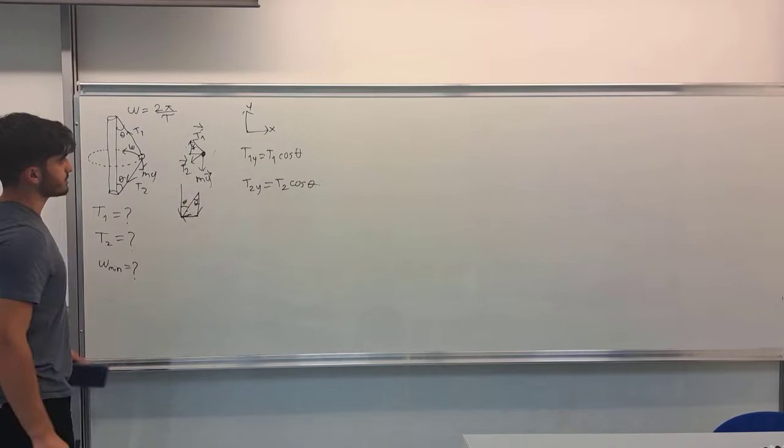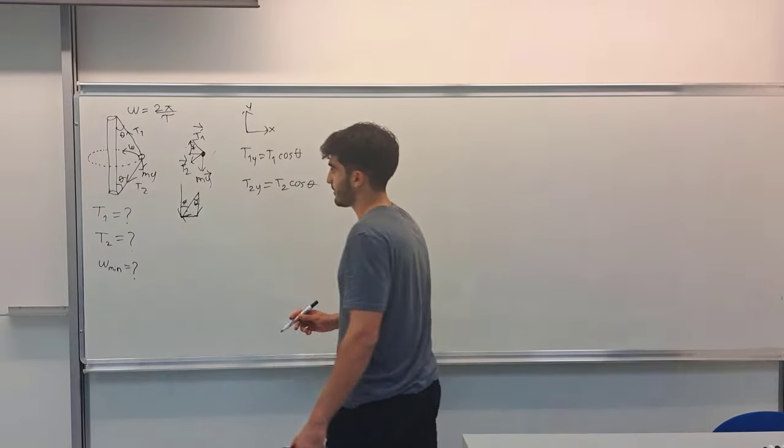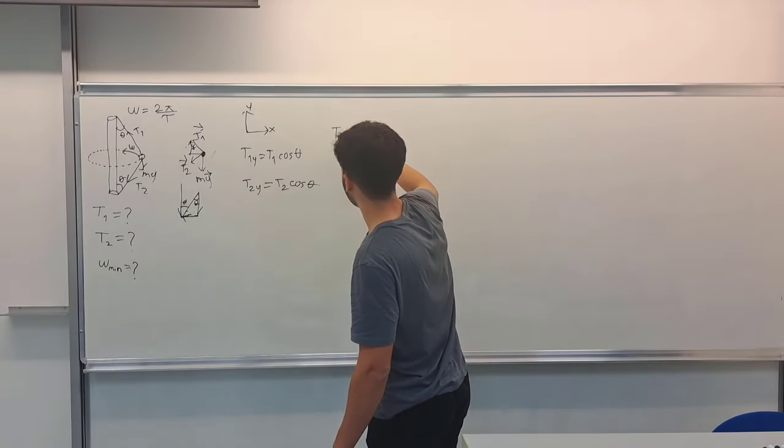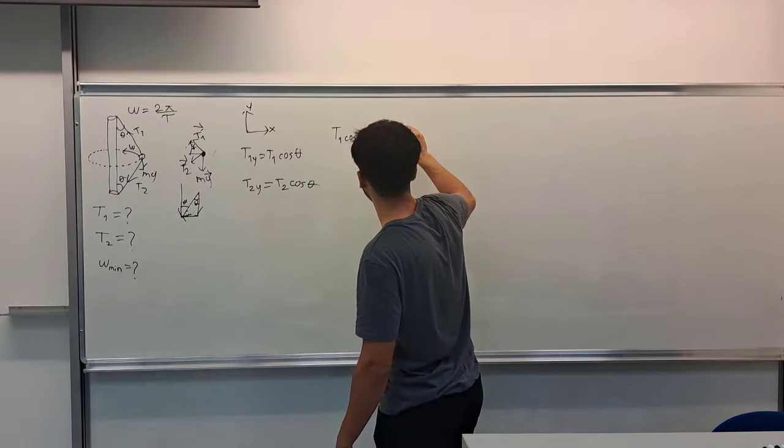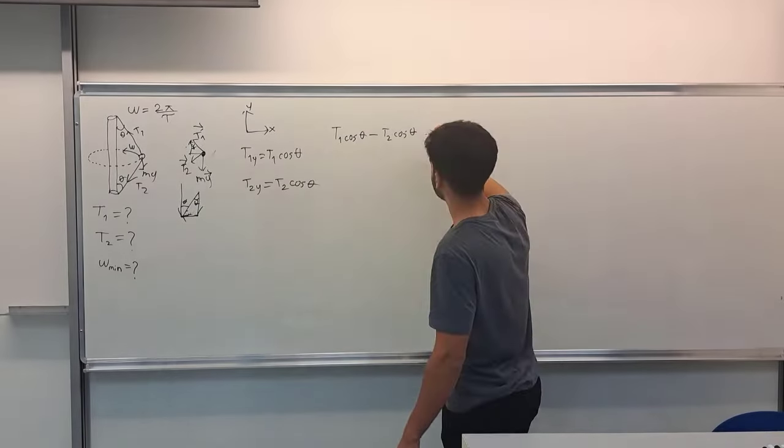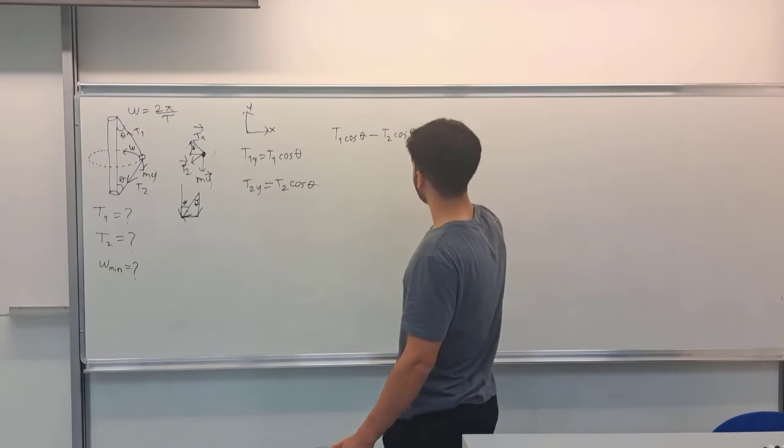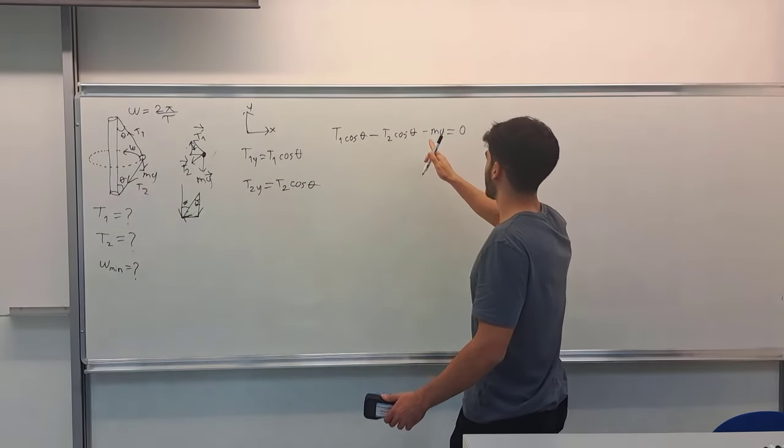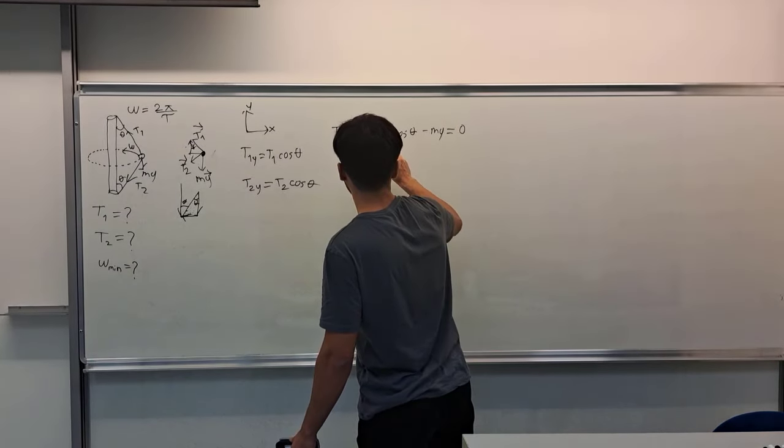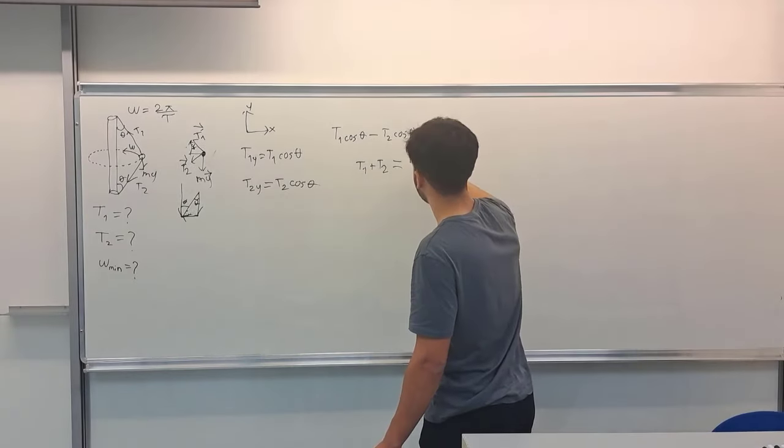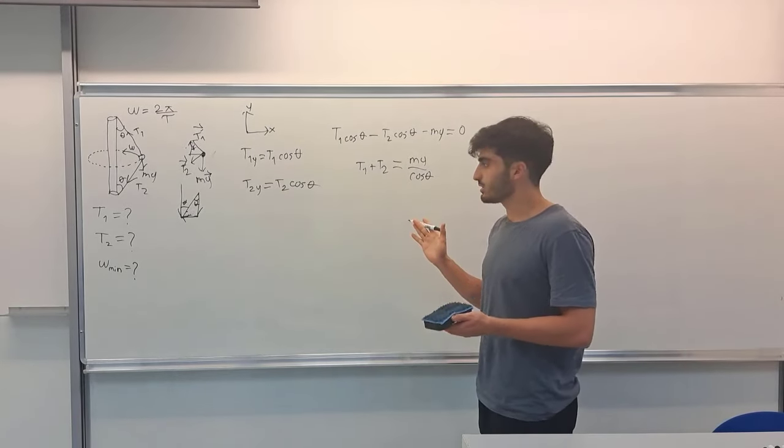Therefore, also, again, the y-component of the T2 is T2y equals T2 times cosine theta. And also, there is a force exerted by the gravitation acceleration. So when I sum up these forces T1 cosine theta in positive y-axis minus T2 cosine theta minus mg equals 0. From that, we can take the mg to the other side and we see T1 minus T2 equals mg over cosine theta. So we obtain an equality.